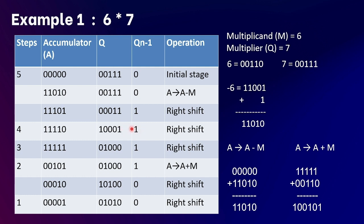In step 3, we check Q's least significant bit which is 1, and Q minus one is 1. Again it's the 1,1 case so we perform an arithmetic right shift. After the shift the accumulator is 11111, Q is 01000, and Q minus one is 1. The third step is complete and count is decremented from 3 to 2.